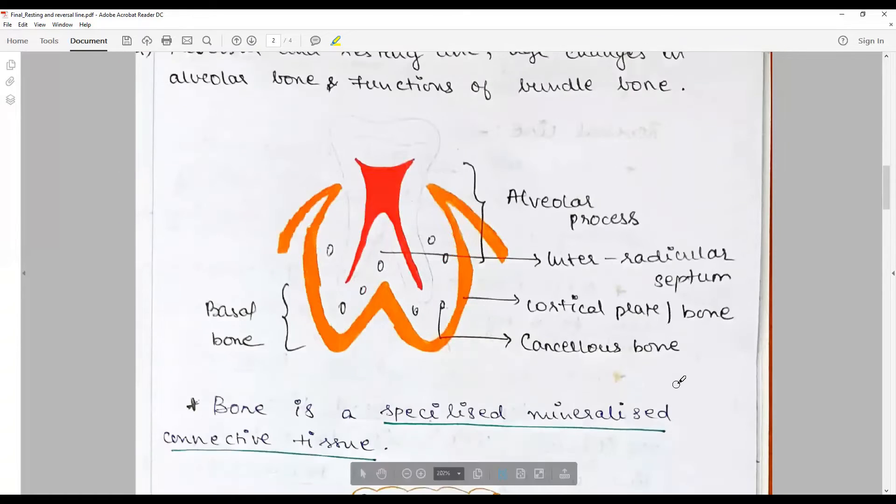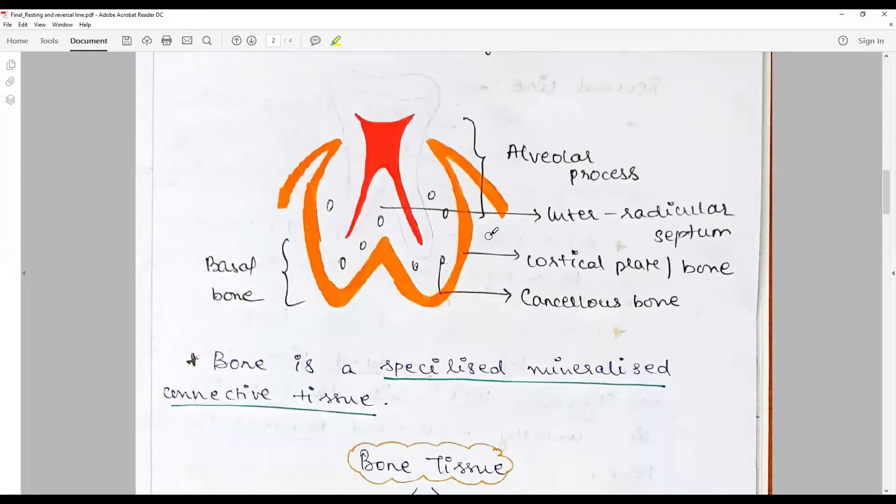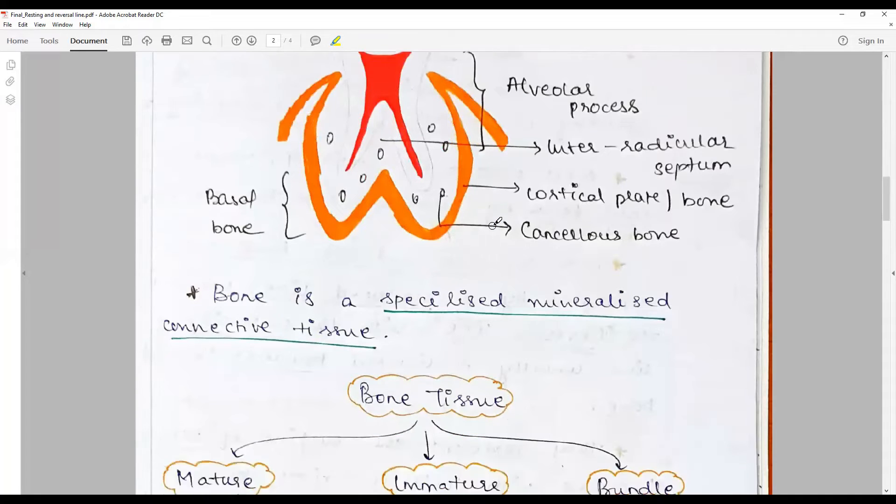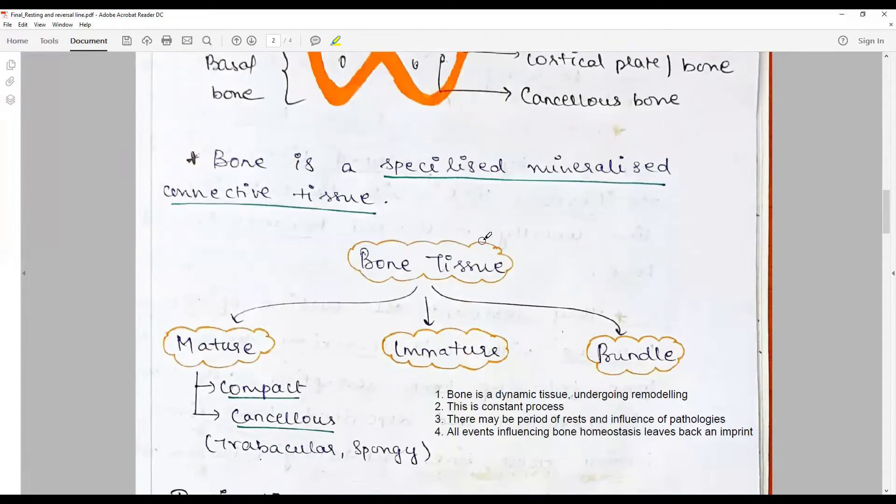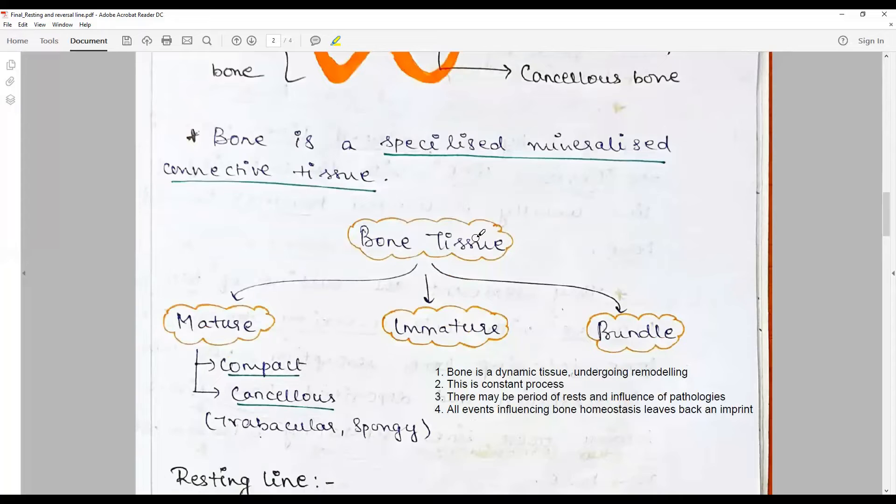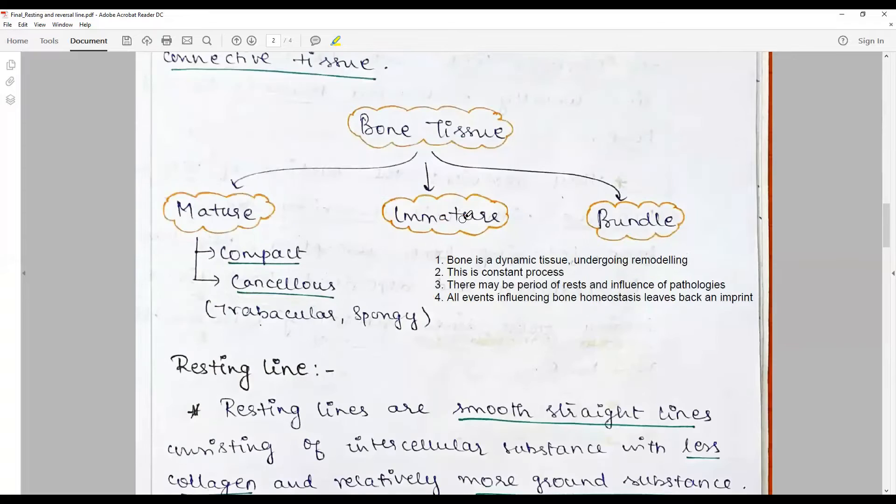Another candidate has put up a diagram showing the parts of the bone and the classification. Both these candidates should have started the answer as: bone is a dynamic tissue undergoing constant remodeling. There may be periods of rest and influence of pathologies. All these events influencing bone homeostasis leave back an imprint in the form of lines: the resting lines and reversal lines.